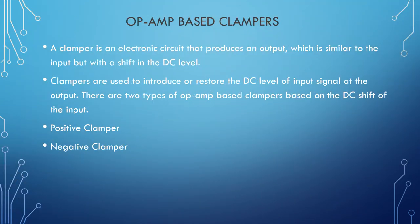An op-amp based clamper is an electronic circuit that produces an output which is similar to the input but with a shift in the DC level. The output of the clamper is a replica of the input, so the peak-to-peak amplitude of the output will always be equal to that of the input. Clampers are usually used to introduce or restore the DC level of a signal. There are two types of clampers: positive and negative clampers.